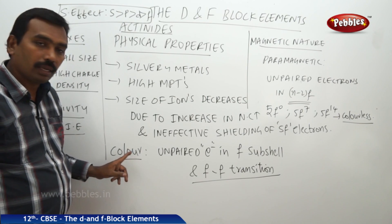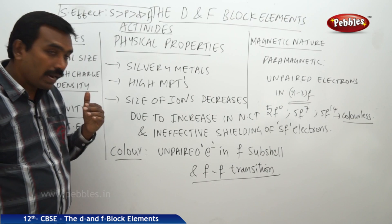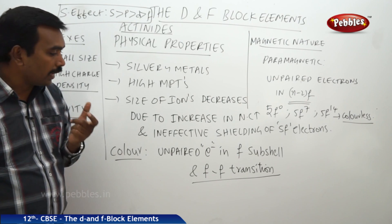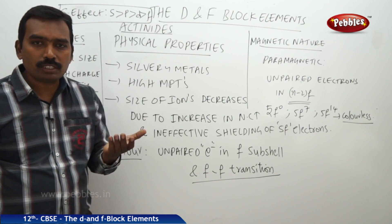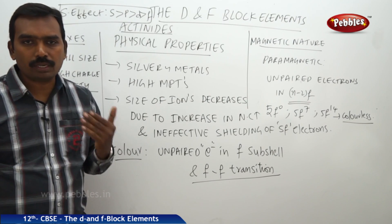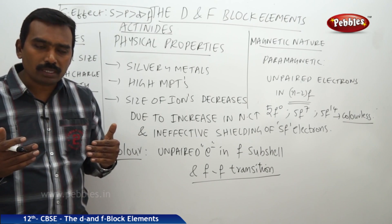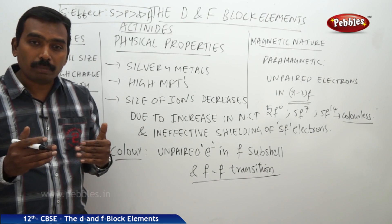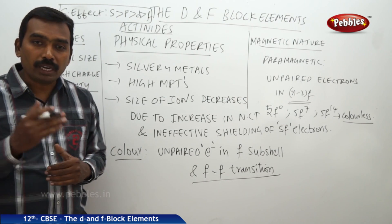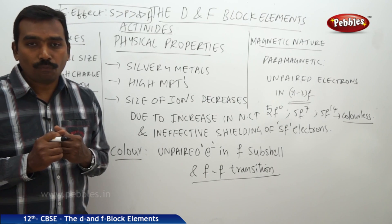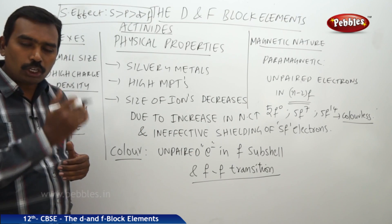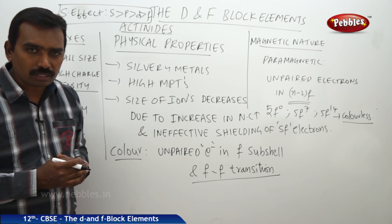Actinides exhibit different colors in different oxidation states. The reason is that in different oxidation states they have different numbers of unpaired electrons in the 5f subshell. Elements with the same number of unpaired electrons may exhibit the same color. The color depends on which color is absorbed from white light, and the complementary color is emitted during de-excitation — we have a series of absorbed colors and complementary emitted colors.